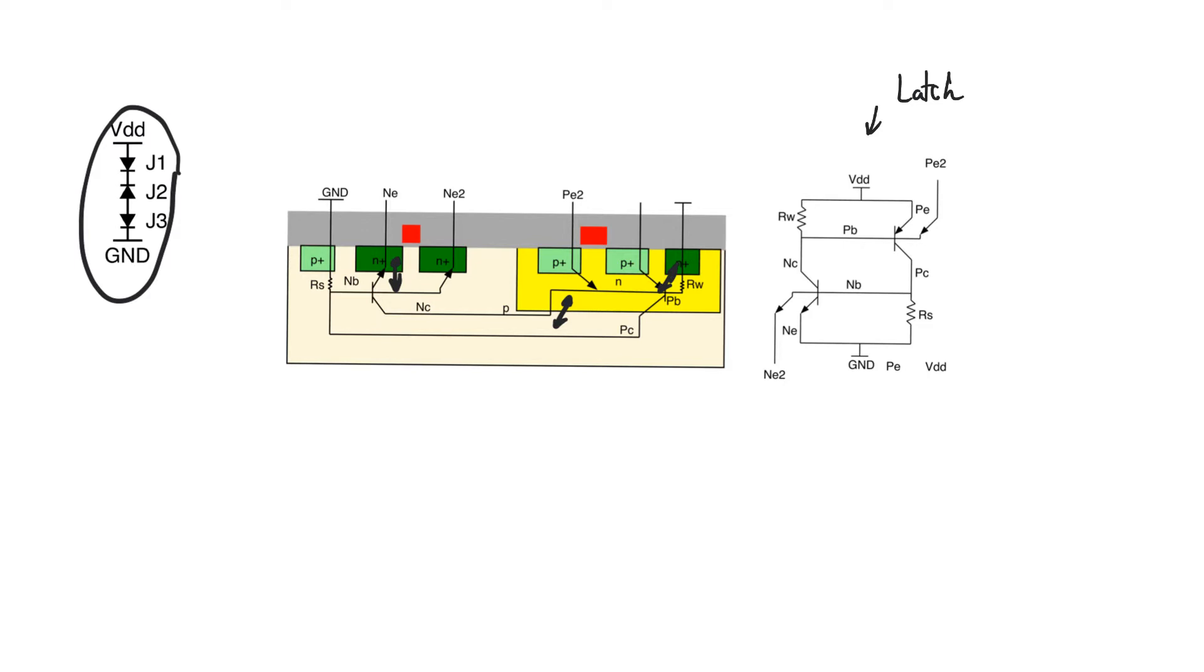The two factors we are missing when we assume the latch up structure cannot turn on are the presence of drains in the transistors and also the presence of transient currents. So if we look at the drains, the drains form second emitters for both the PNP and the NPN structure. And so we have these drains forming a second emitter.